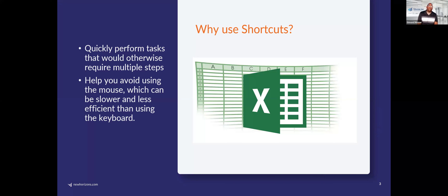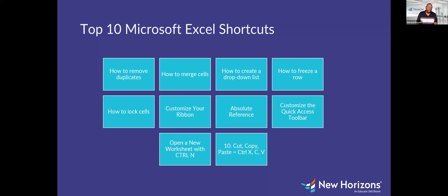Why should we use shortcuts? To quickly perform tasks that would otherwise require multiple steps. You can help avoid using the mouse, which can be slower and less efficient than using the keyboard. During this session we'll look at how to remove duplicates, merge cells, create drop-down lists, freeze a row, lock cells, customize your ribbon, do absolute referencing, customize the quick access toolbar, and common keyboard shortcuts like Ctrl+N, C, B, X, and others.